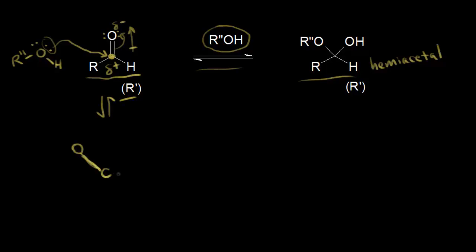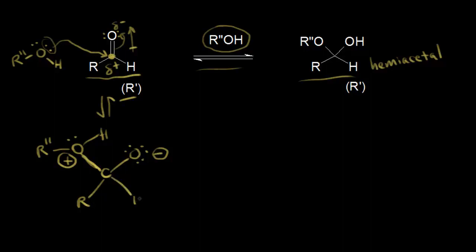Here's our oxygen — it's formed a bond to our carbon. There was a hydrogen attached to our oxygen and also an R double prime group, and there is still one lone pair of electrons on our oxygen, giving it a plus one formal charge. This carbon was bonded to another oxygen which used to have two lone pairs of electrons; it just picked up another lone pair, so it now has a negative one formal charge. We still have an R group and a hydrogen. The electrons on our alcohol formed the bond between oxygen and carbon, and the pi electrons in the carbonyl moved out onto our oxygen. This is our intermediate.